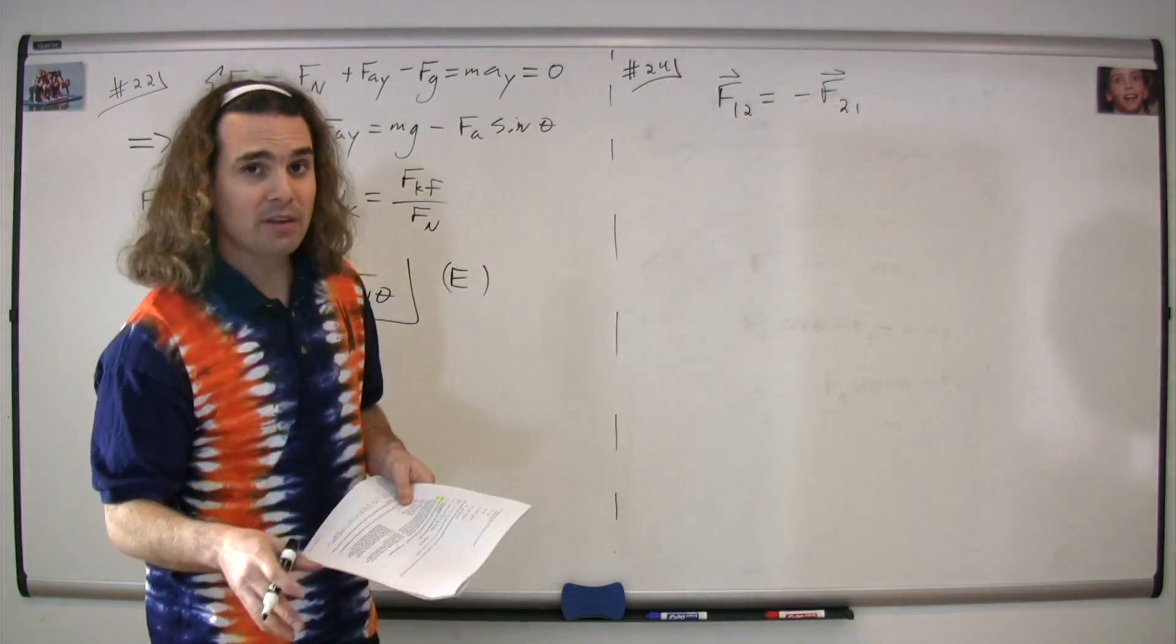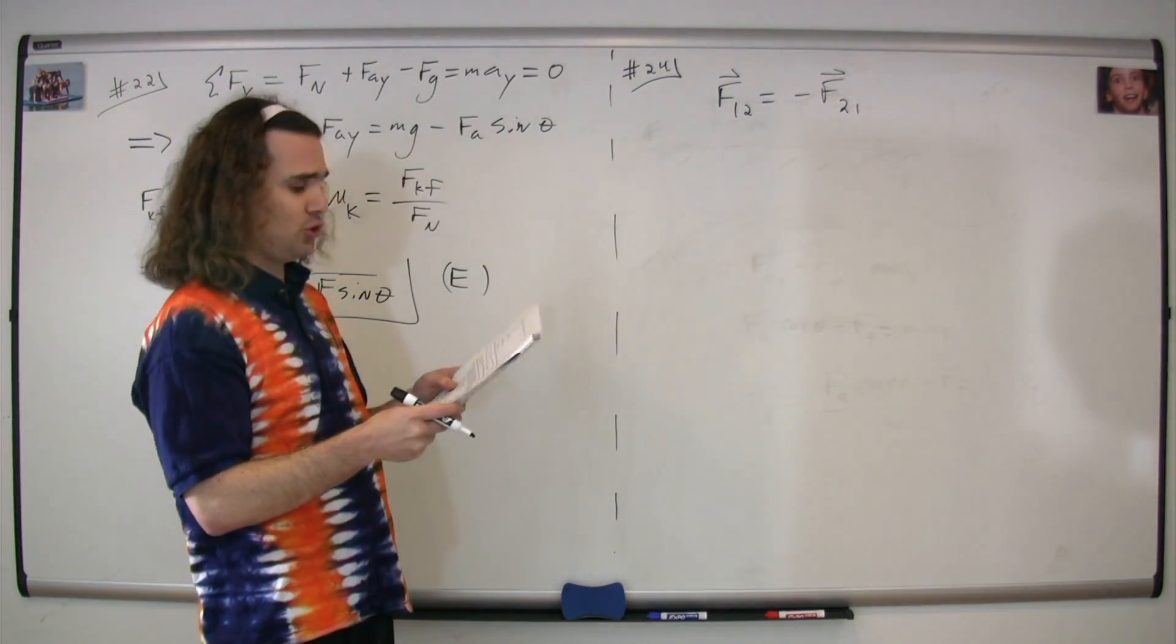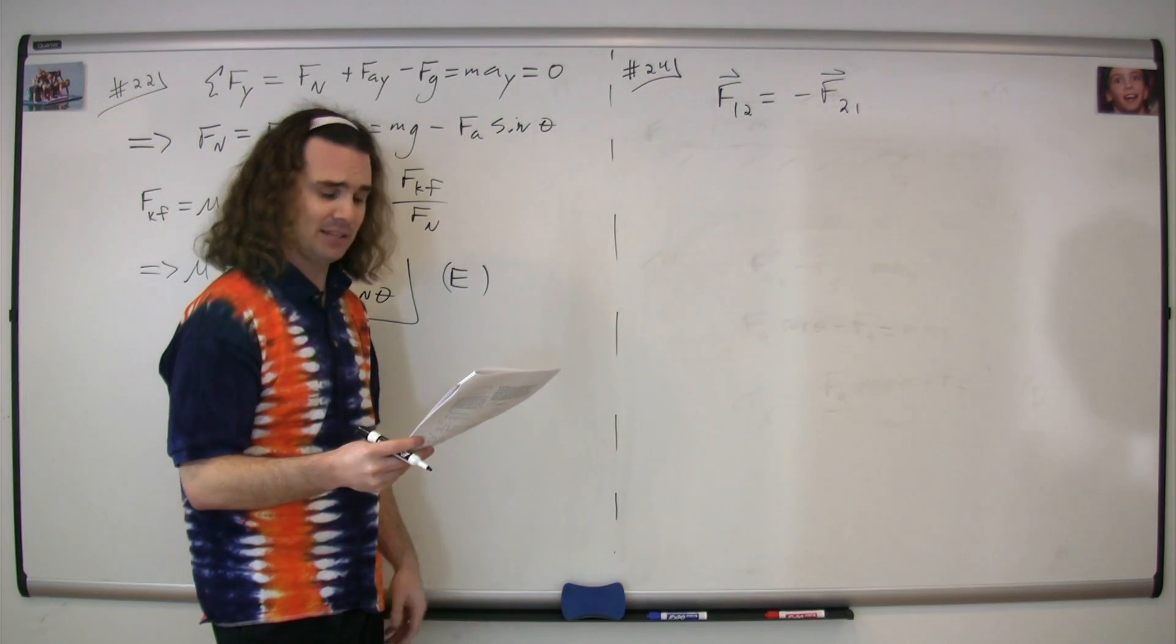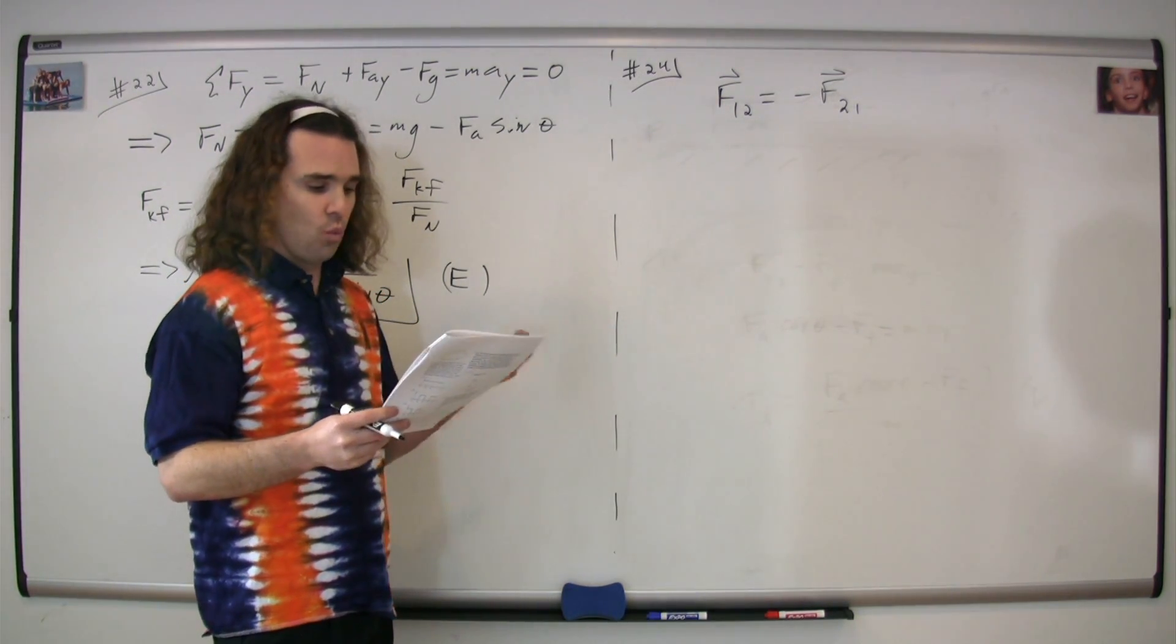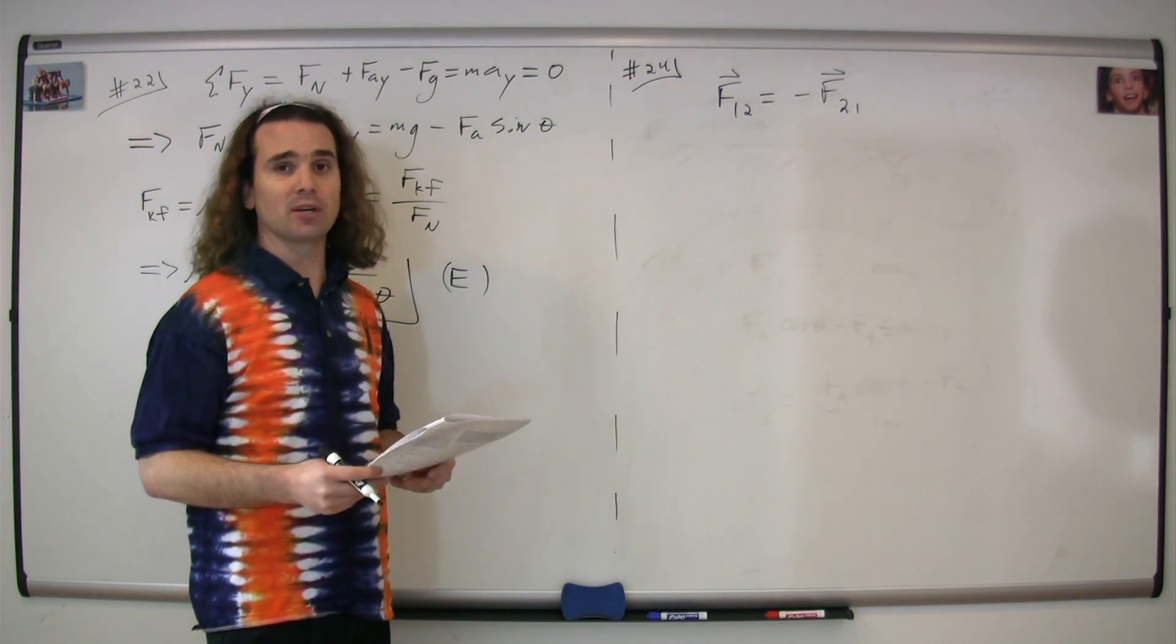Question 24. You have two people standing on frictionless ice. They're standing there, and then they push on one another. And the question is, what is the velocity of their center of mass after they push on one another?